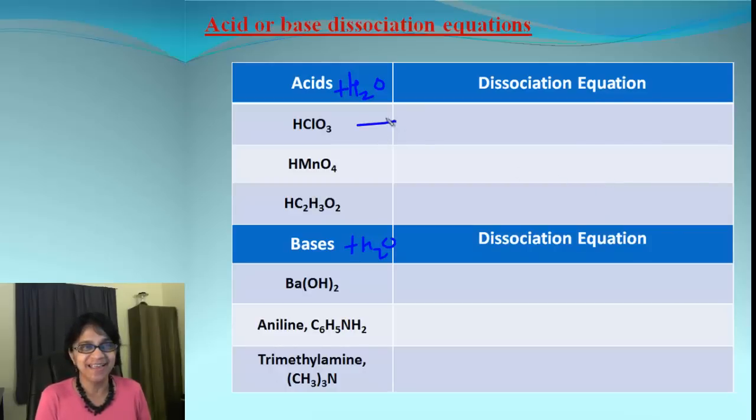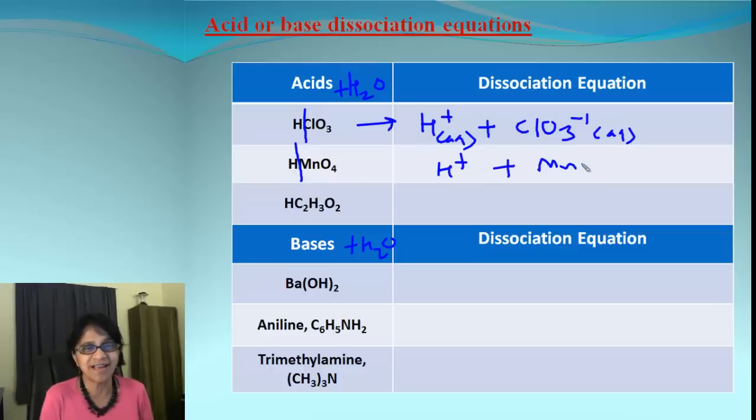Dissociation in case of acids: dissociation is simply splitting the acid into hydrogen ion and remaining negative group, and each of those will be in aqueous form. When we come to the next acid, it's going to be again hydrogen ion and it will be permanganate ion.